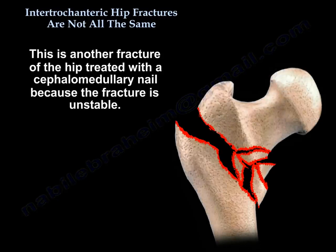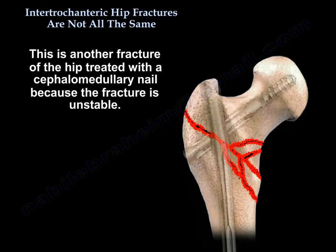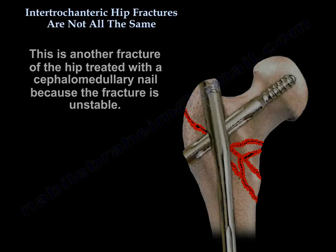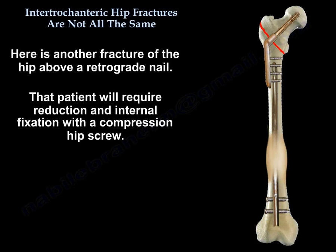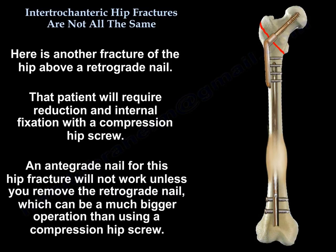This is another fracture of the hip treated with a cephalomedullary nail because the fracture is unstable. Here is another fracture of the hip above a retrograde nail. That patient will require reduction and internal fixation with a compression hip screw. An antegrade nail for this hip fracture will not work unless you remove the retrograde nail, and that can be a much bigger operation than a compression hip screw.